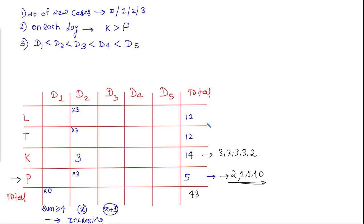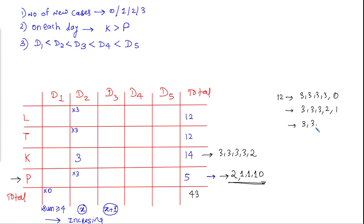Now how can the addition of 12 be formed using 5 numbers from 0, 1, 2, 3? There are three ways: it can be {3,3,3,3,0}, or {3,3,3,2,1}, or {3,3,2,2,2}. These are the three ways the addition 12 can be formed for localities L and T.